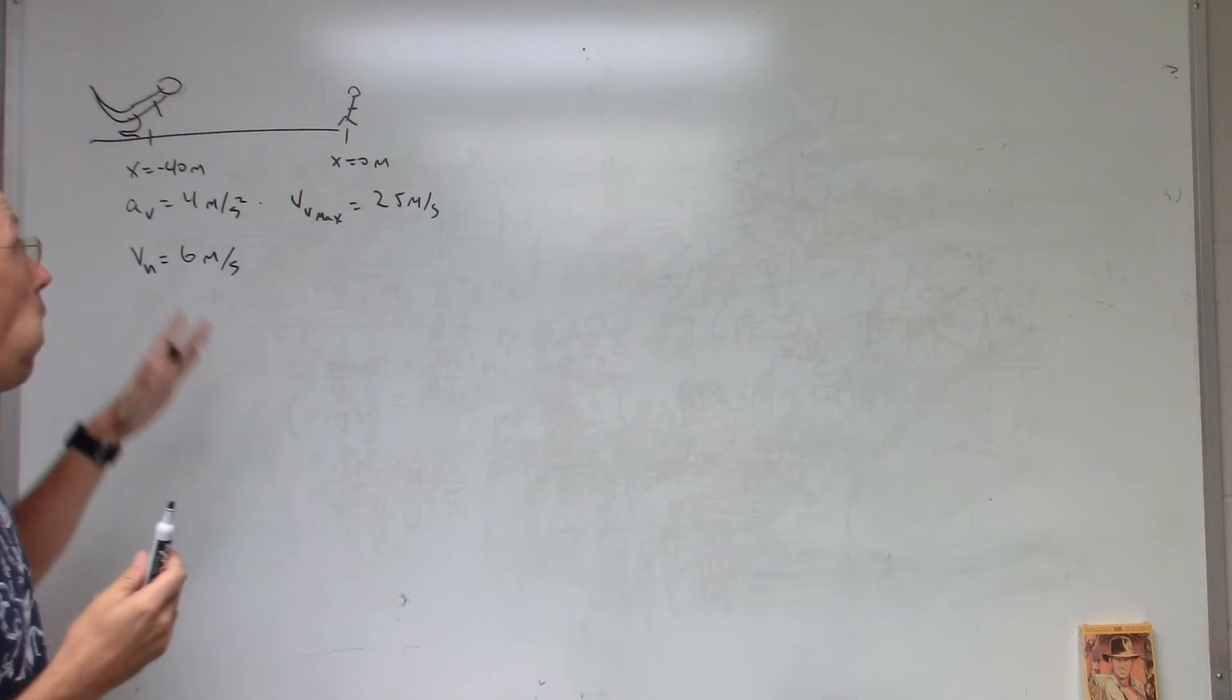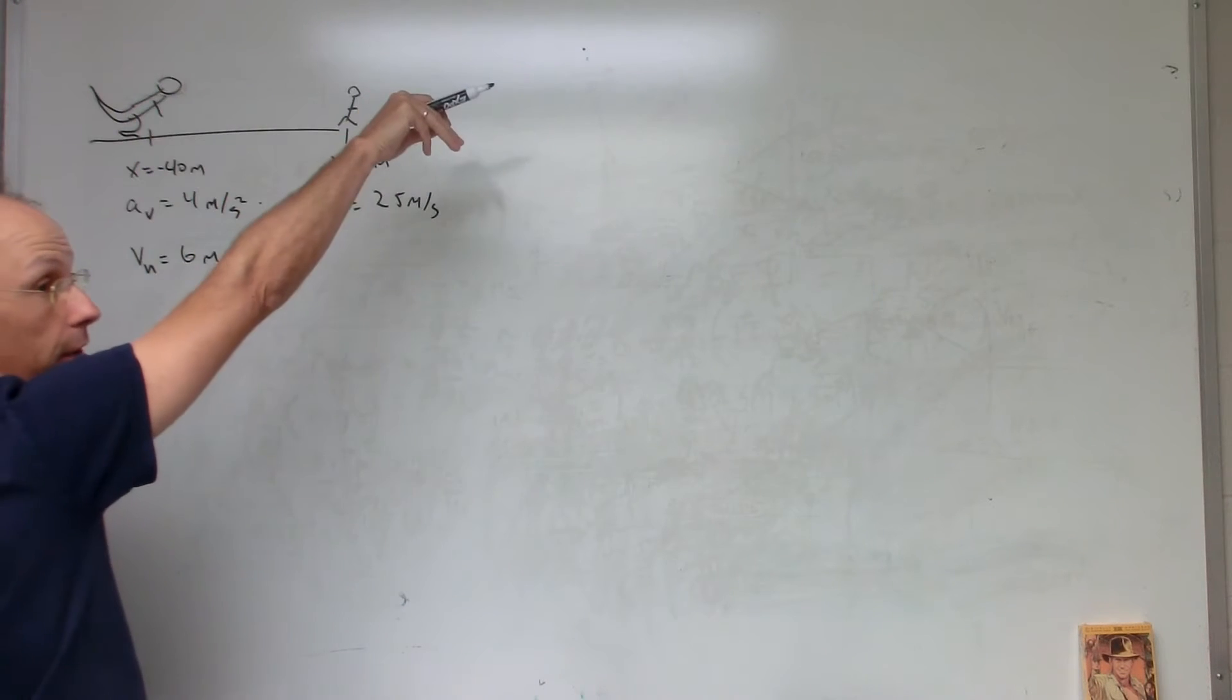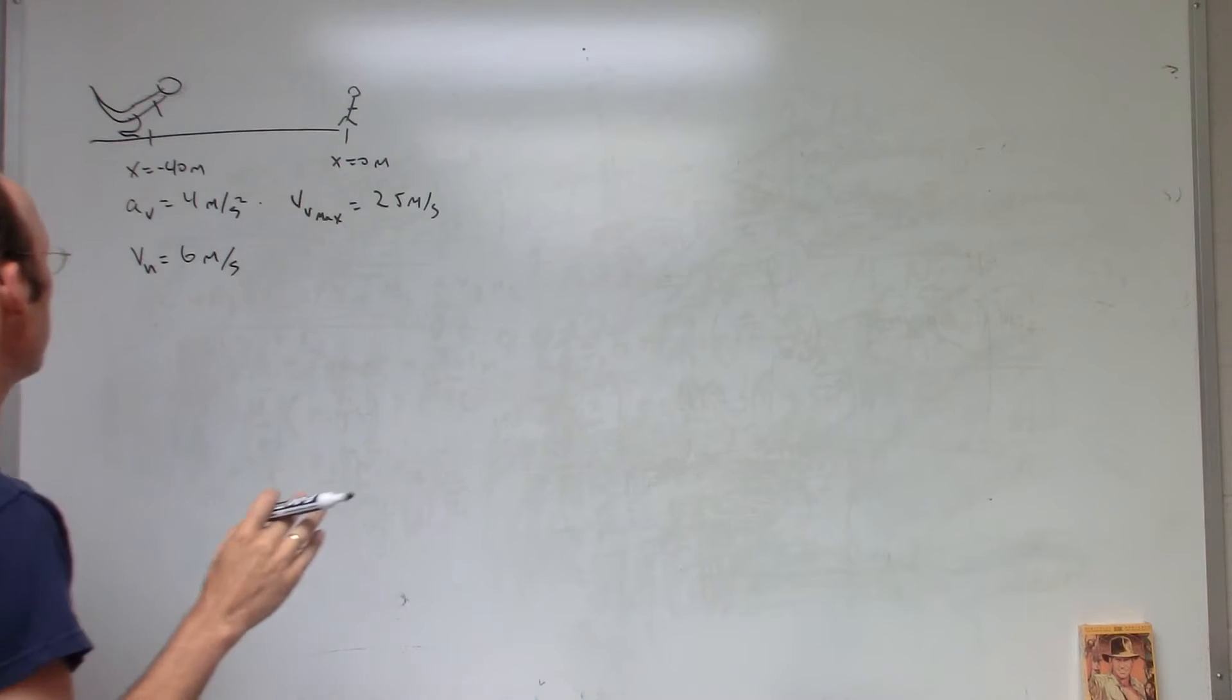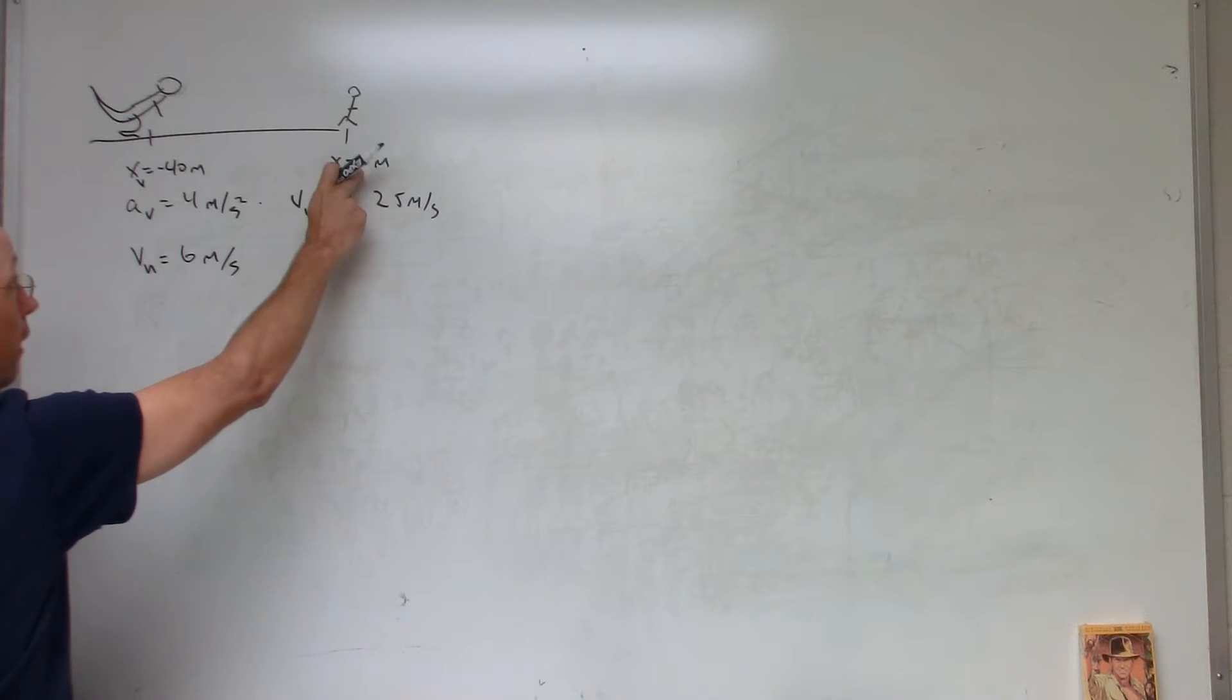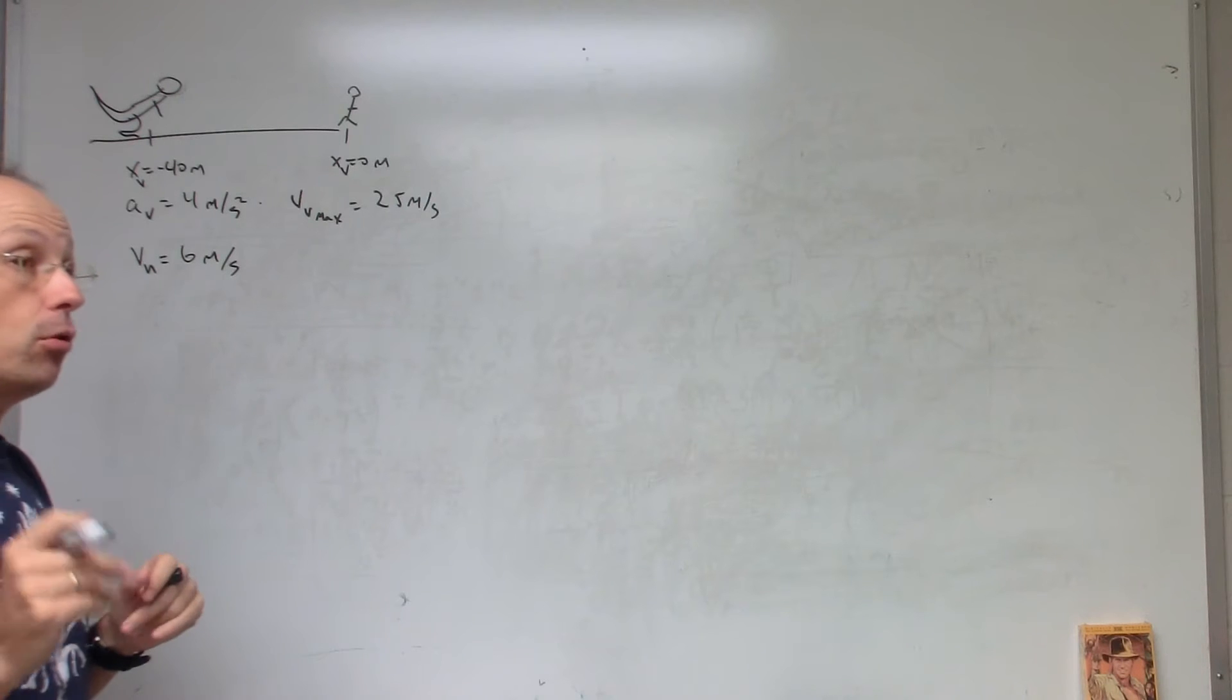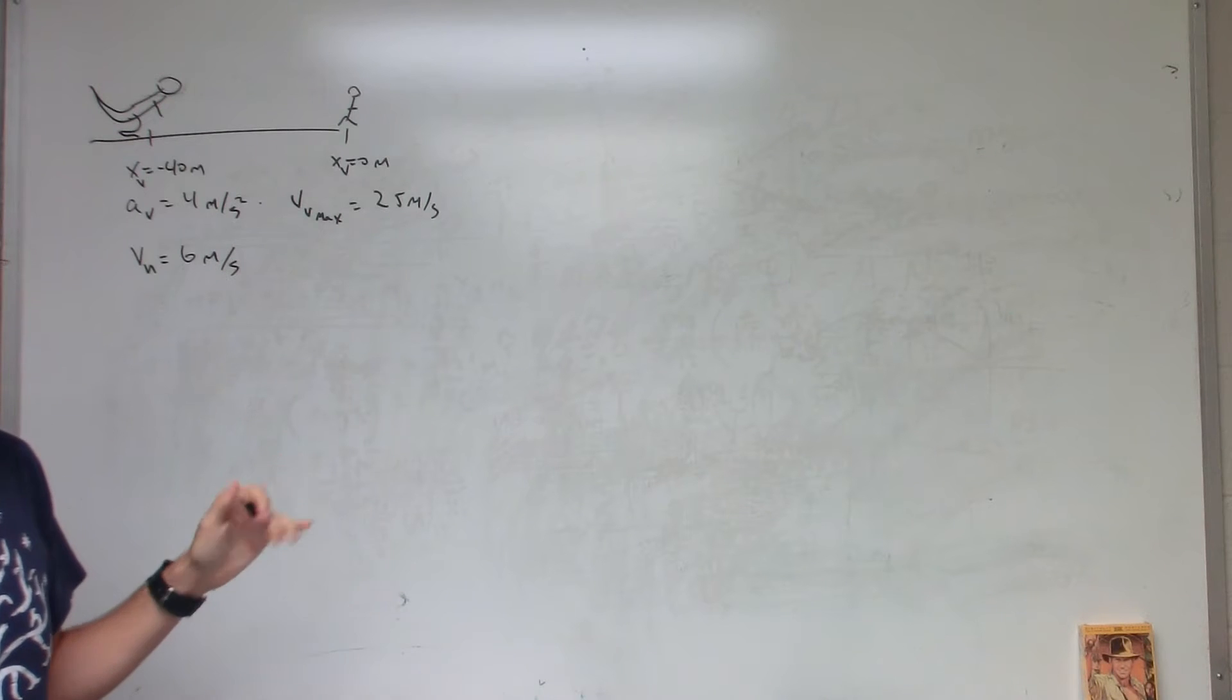The question is, you're a human, you're going to run away. The Velociraptor runs after you. When does the Velociraptor catch you and devour the human? So this is X. I've wrote down some stuff here. The initial X position of the human is zero. The initial X position of the Velociraptor is negative 40. The human's velocity - it didn't say anything about the human's acceleration, so I'm just going to assume that the human gets up to 6 meters per second instantaneously.